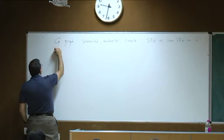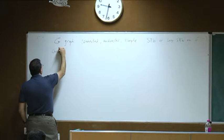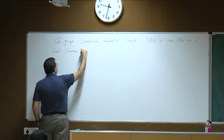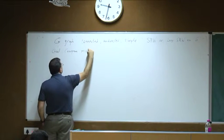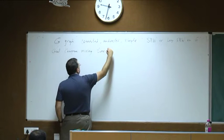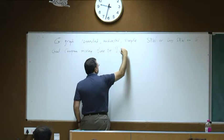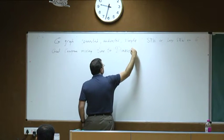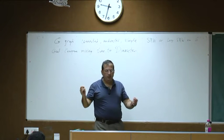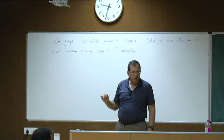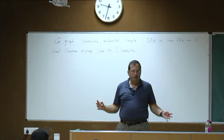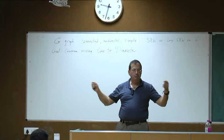The goal is to compare mixing time to the diameter. For any graph, we have a natural graph metric: the distance between two nodes is the length of the shortest path between them, and the diameter of the graph is just the maximal distance between two nodes.